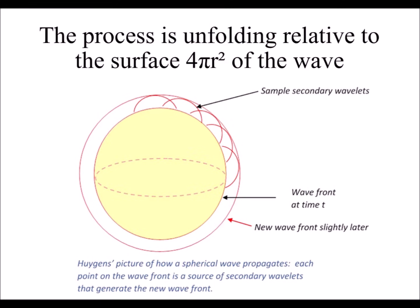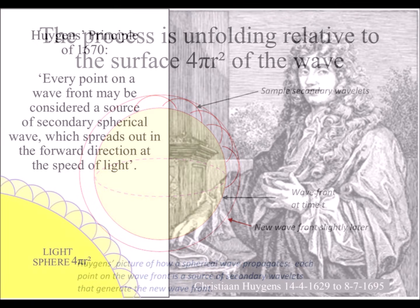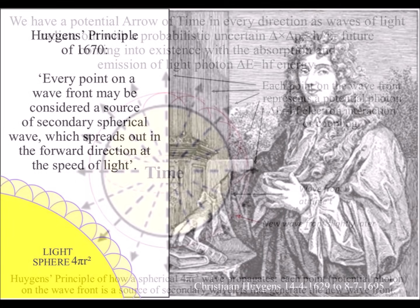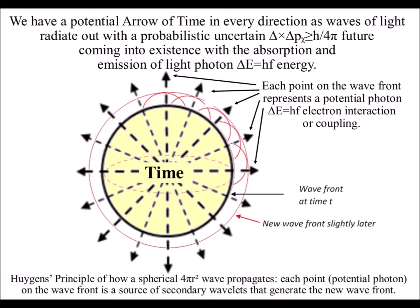The geometrical aspect of this process is based on Huygens' principle, which says every point on a light wavefront has the potential for a new spherical light wave. We can think of every point as a potential for a photon-electron interaction or coupling.